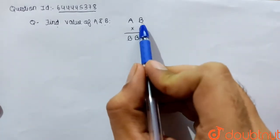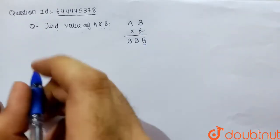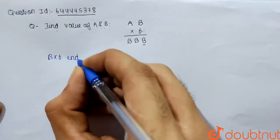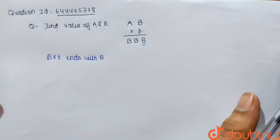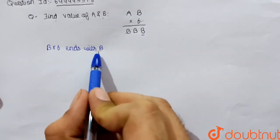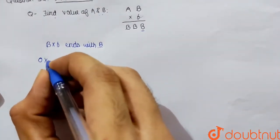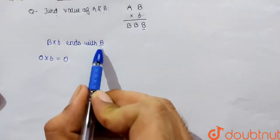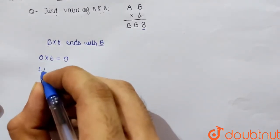This means if we multiply b by 6, the result will end with b. So b into 6 must end with b. Now let's check how many values of b multiplied by 6 satisfy this condition. If b is 0, then 0 into 6 is 0 — that ends with 0. Let's check 1 into 6.